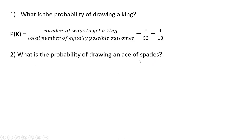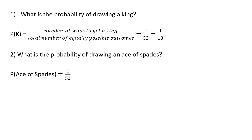What is the probability of drawing an ace of spades? The probability of an ace of spades is going to be one divided by 52. There is only one card in the deck of 52 that is an ace of spades — there are four aces, but only one ace of spades.